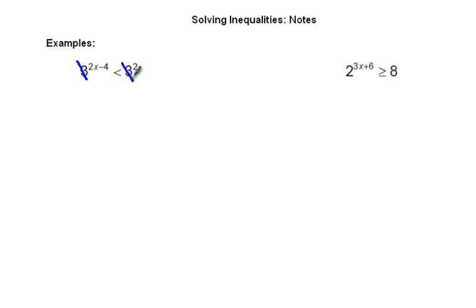So when you do have the same base, you just cancel them out. You rewrite it. 2x minus 4 is less than 2. You rewrite it so that it just includes the exponents. And then you solve it just like you would before.